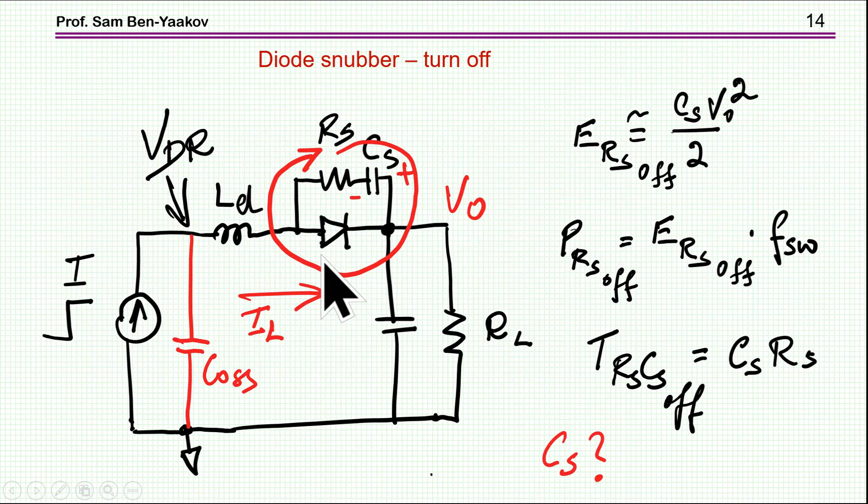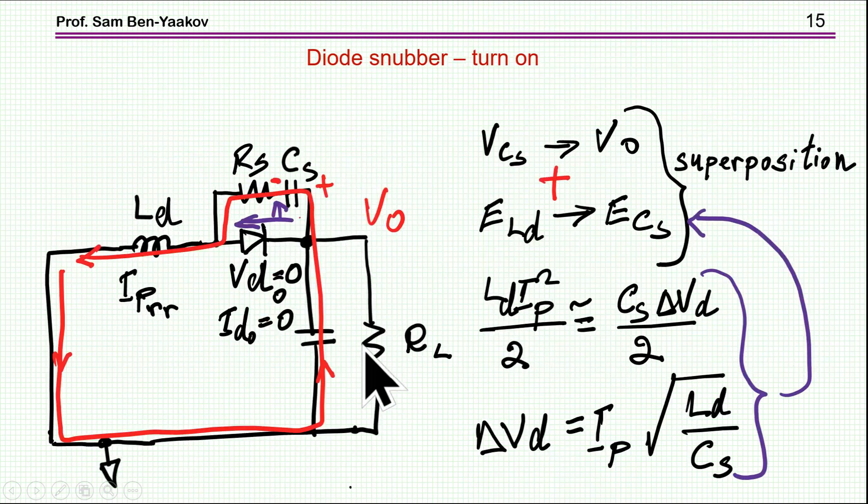We do have another issue we have to take into account, and that is that while this discharge is going on, the energy of the capacitor is actually being dissipated by this resistor. It's a discharge of a capacitor. So, the energy is CS V squared over 2, and the power dissipated in this capacitor is this power. So, this is something we have to take into account, aside from the fact that the time constant has to be such that there will be sufficient time for the discharge.